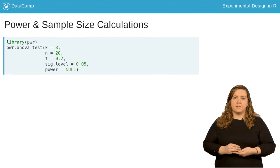The power.anova.test function takes five arguments, of which one must be entered as null so it can be calculated. K is the number of groups in the comparison, N is the number of observations per group, F is the effect size, then you have to enter a significance level and a power.